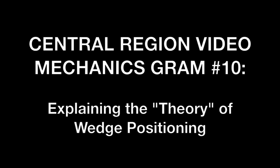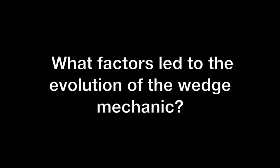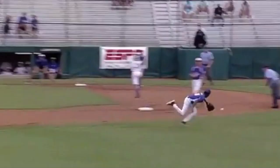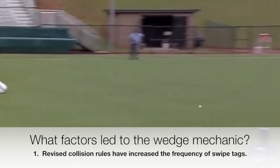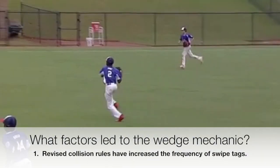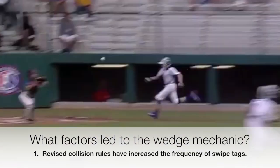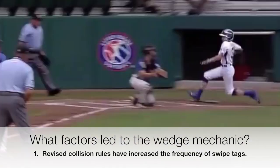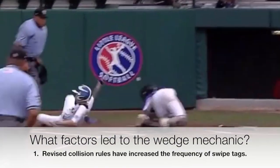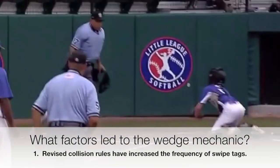Our tenth Video Mechanicsgram will seek to explain the theory behind wedge positioning. As wedge philosophy continues to evolve, many ask what factors led to the changes in philosophy for positioning on tag plays. The first answer is that changes in collision rules and various rule sets have led to an increase in swipe tag attempts in all levels of baseball.